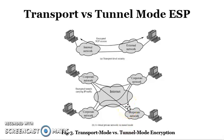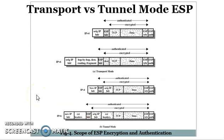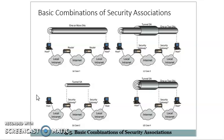For transport mode versus tunnel mode encryption with ESP: the encrypted ESP service is used between internal and external networks, while in tunnel mode the internal parties are covered by the tunnel. Go through the diagram showing the basic combinations of security associations — how security is associated with different types using tunnel mode or transport mode. I hope you all understood the AH header, ESP header with their fields, anti-replay service, and transport and tunnel mode. Thank you.